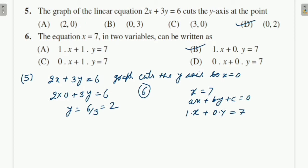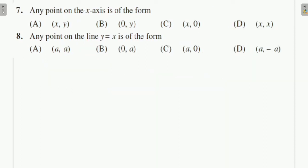Question 7: Any point on the x-axis is of the form — for the x-axis, the value of y is 0. So option C is correct.